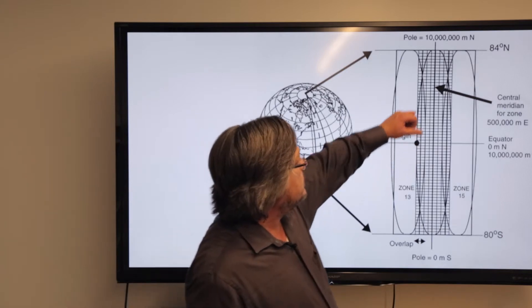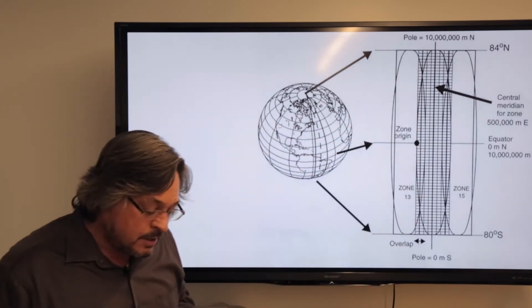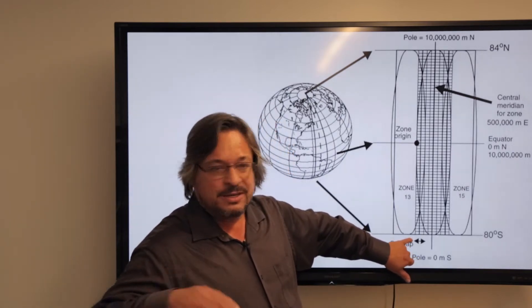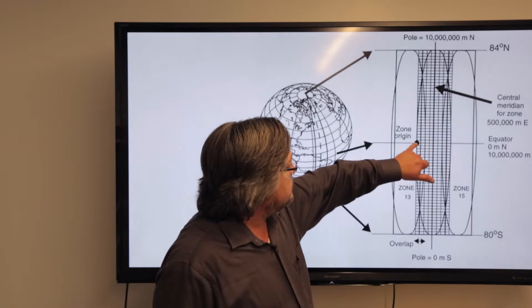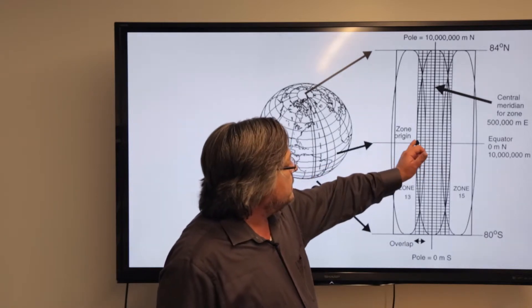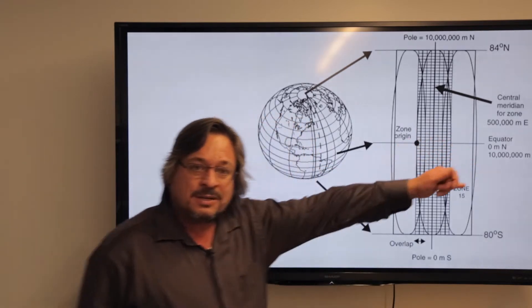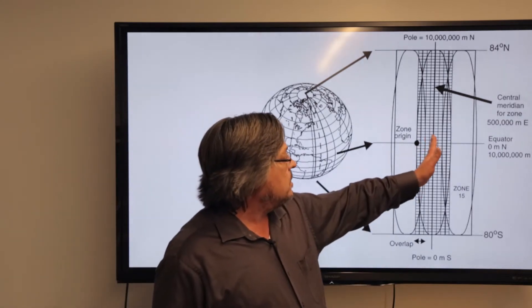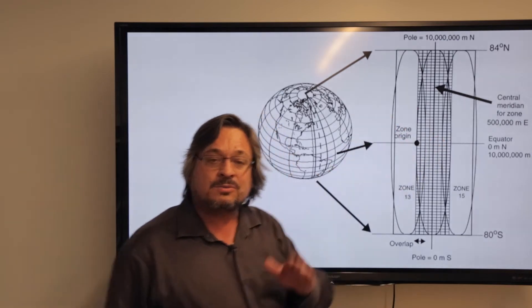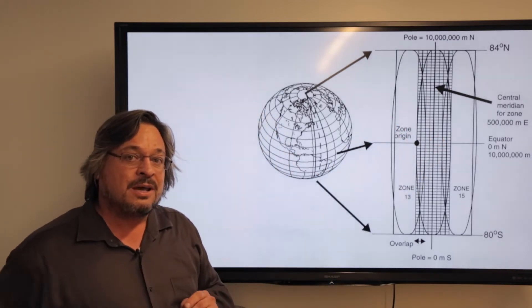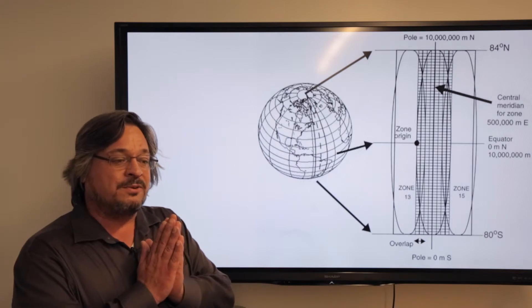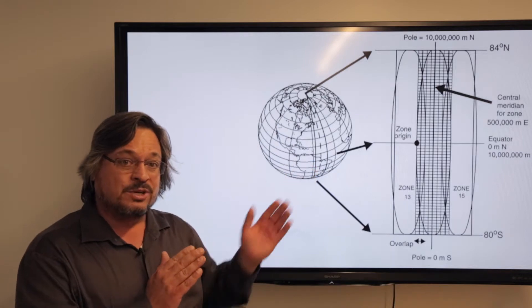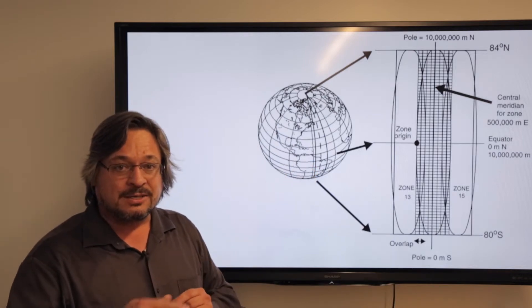We get zero and then we move up. The eastings value uses a little false origin. Here's your false origin, and then it measures things going from east to west. Every central meridian is recognized at 500,000 meters. If the numbers are smaller, they're to the west of the central meridian. If the numbers are larger than 500,000, they're to the east.